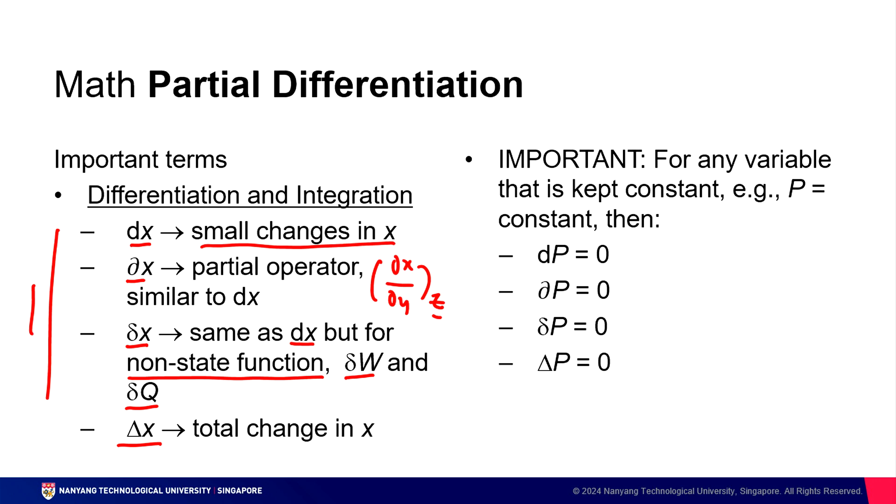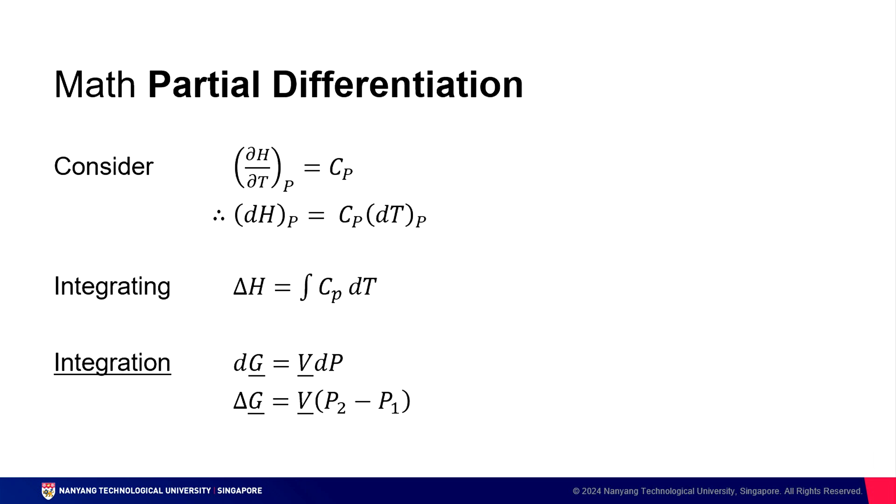So this is rather important. We have to understand that for any variable that is kept constant, for instance P is a constant, then any change in P is zero. Let's look at one example, where DH equals DU plus PDV plus VDP. Assume we keep P constant. When P is constant, DP equals zero, hence we can cancel the entire term, and we can explore DH equals DU plus PDV in isolation.